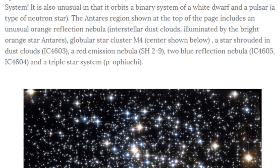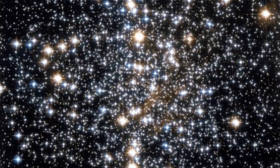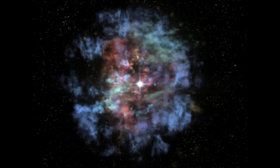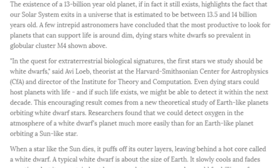The Antares region shown at the top of the page includes an unusual orange reflection nebula, interstellar dust clouds illuminated by the bright orange star Antares, globular star cluster M4 center shown below, a star shrouded in dust clouds, red emission nebula, two blue reflection nebula, and a triple star system. That's all that is right there, that pretty picture. Scientists found an unusual white dwarf system that might contain the oldest planet in our galaxy.